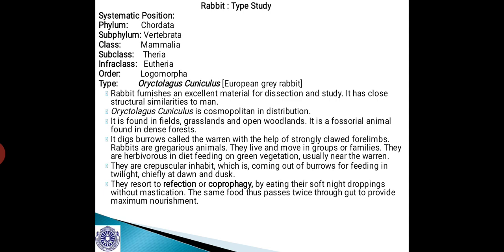Oryctolagus cuniculus is cosmopolitan in distribution. It is found in fields, grasslands, and open woodlands. It is a fossorial animal, meaning a fast-running animal found in dense forests. It digs burrows called warrens with the help of strongly clawed forelimbs. Rabbits are gregarious animals and they live and move in groups of families. They are herbivores in diet, feeding on green vegetation usually near the warren.